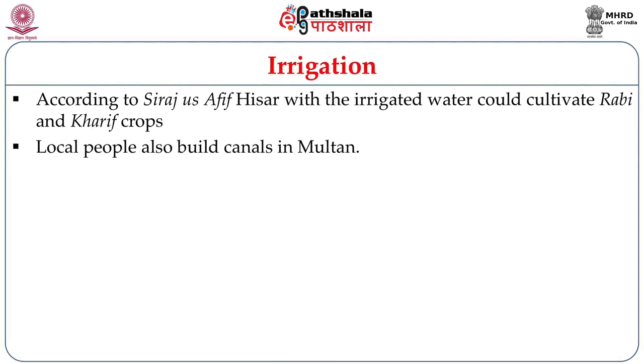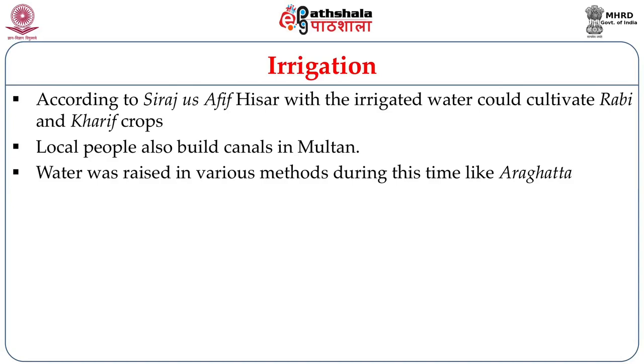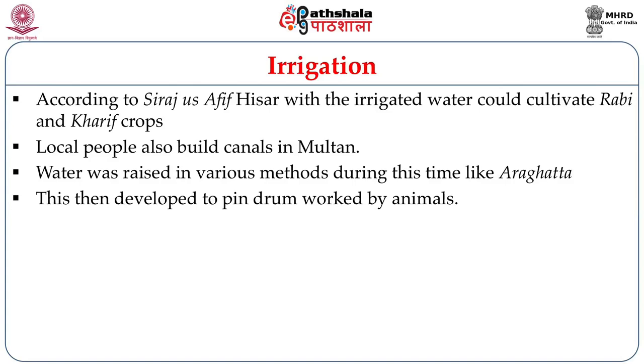It is believed that the same peasants sowed both these crops. Local people could also build canals in the Multan region, and these canals were maintained by local people with some help from the royal houses. Water was raised in various methods. In ancient times there is reference to the Aragotto, a kind of pin drum system, which was later worked by animals. This system is also referred to by Babur in his Babarnama.